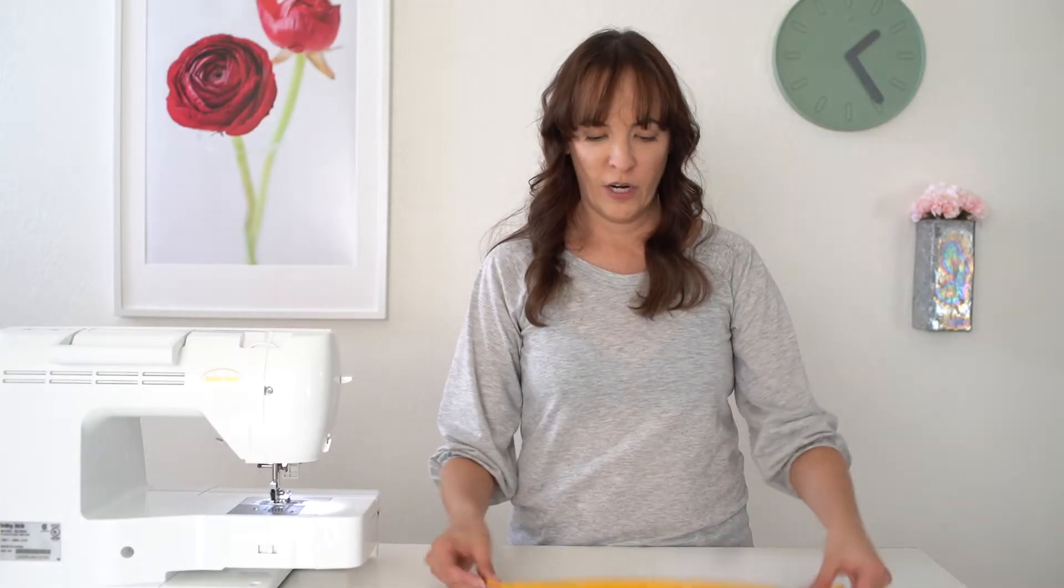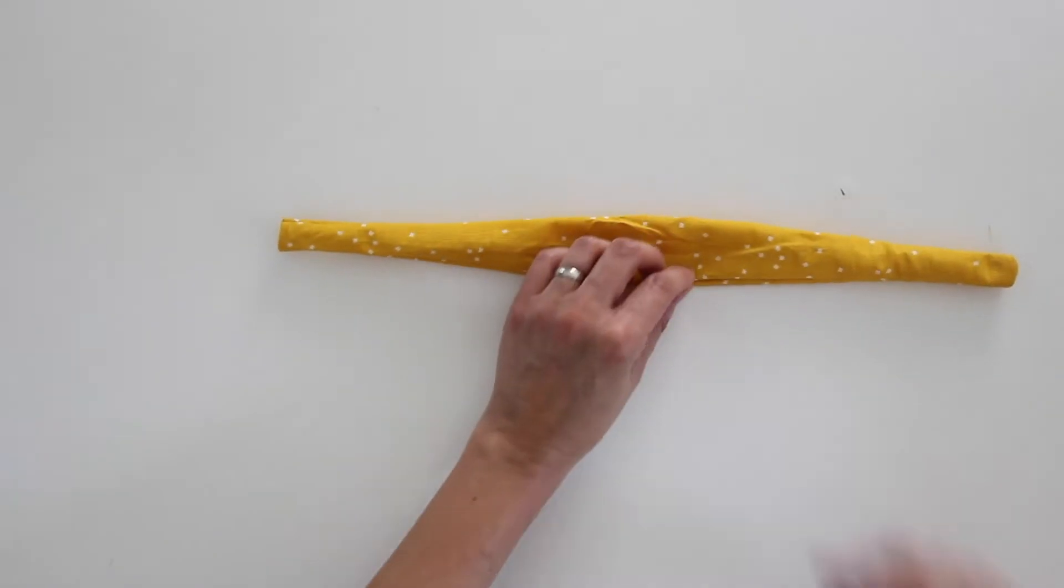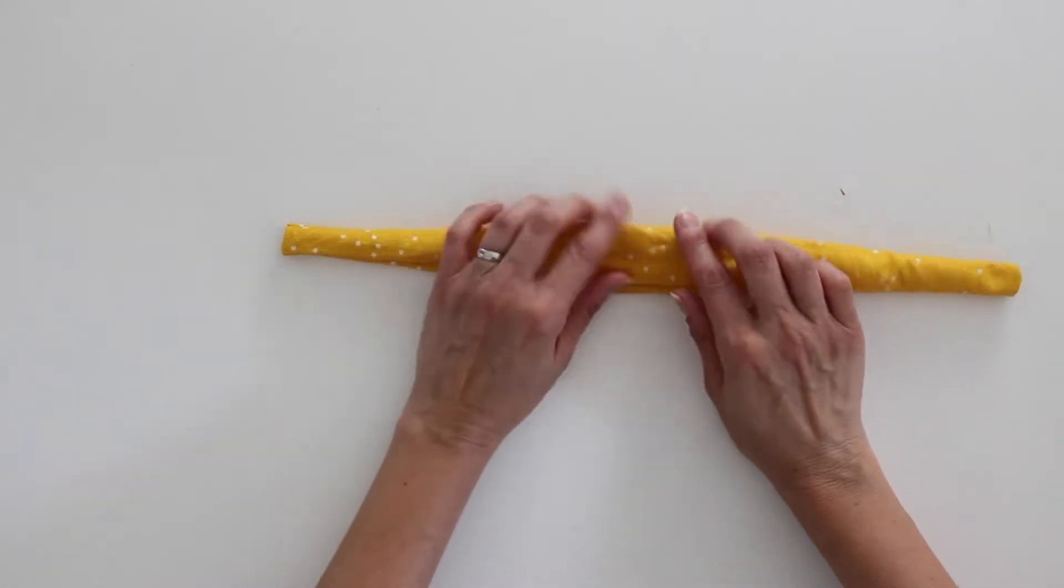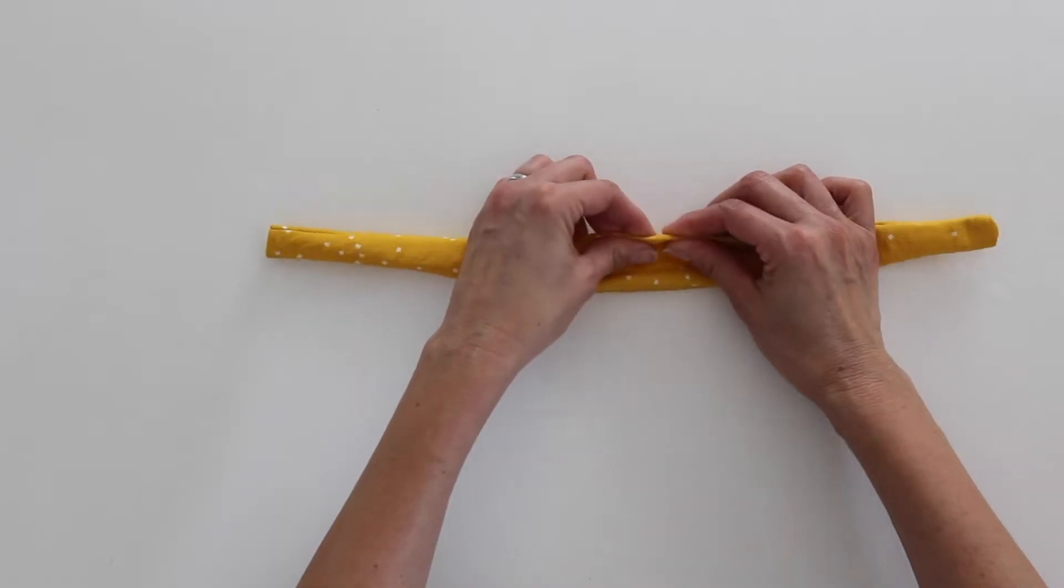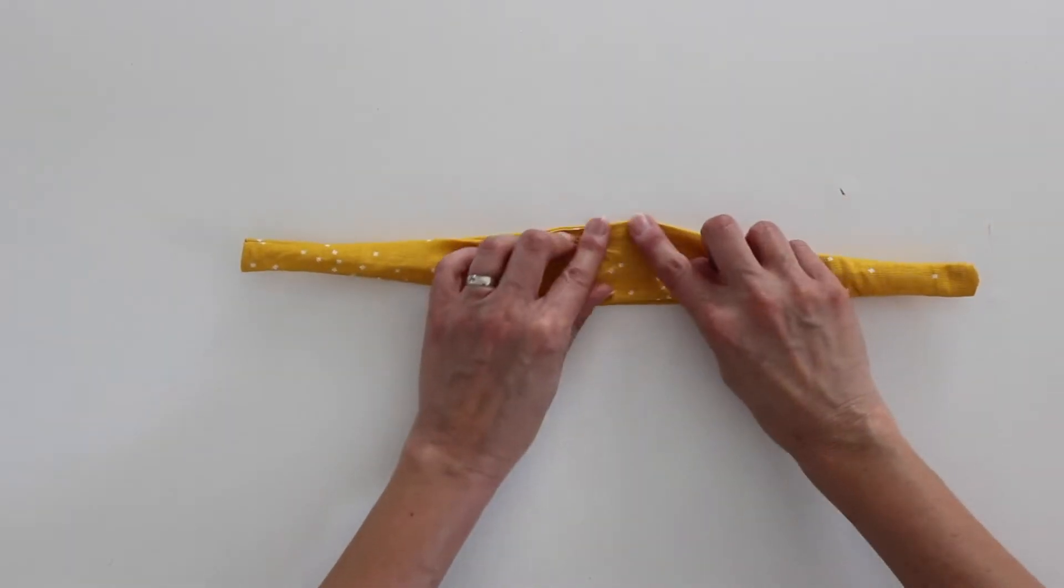And then once you have your headband turned right side out, you're going to want to press it. It helps to go and kind of pull out the seam edges and roll them and kind of finger press it first before you take an iron to this.